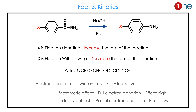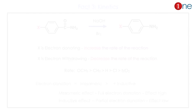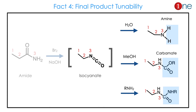Regarding kinetics: what happens if you have an electron-donating group or electron-withdrawing group in the migrating group? An electron-donating group increases the rate of reaction; an electron-withdrawing group decreases the rate. For example, methoxy gives a higher rate while nitro gives a lower rate. The order goes from mesomeric to inductive effects — mesomeric is higher because of full electron donation.